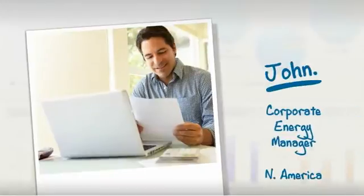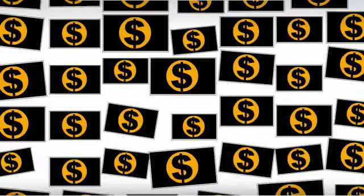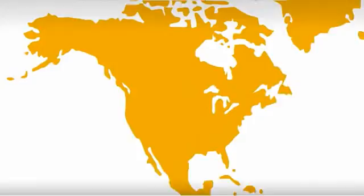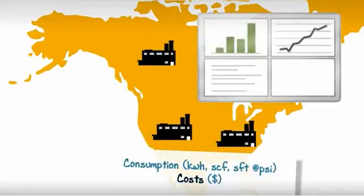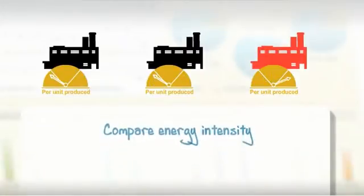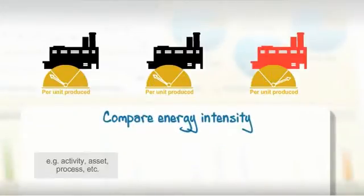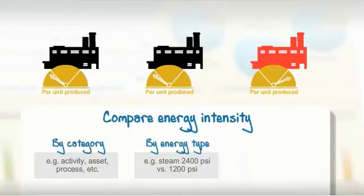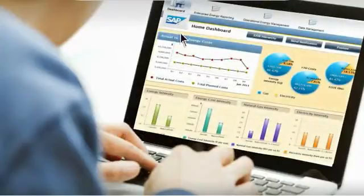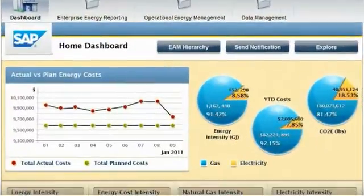John, as corporate energy manager in North America, needs to reduce his company's overall energy costs by 3-5% in a year. To get started, he needs a comprehensive view of the energy costs and consumption across all his facilities. One quick way to identify inefficiencies is to benchmark — that is, to compare the energy intensity of his assets and processes by energy type, normalized by the right factor of comparison. To do so, John launches the SAP Energy Management System.